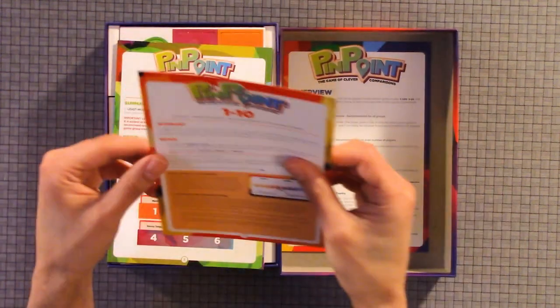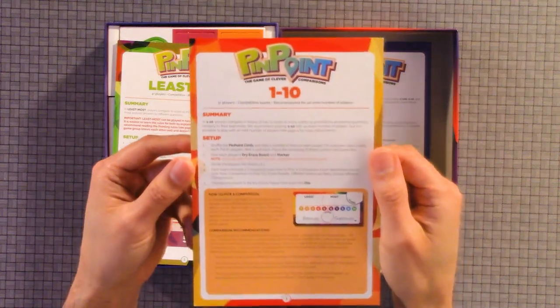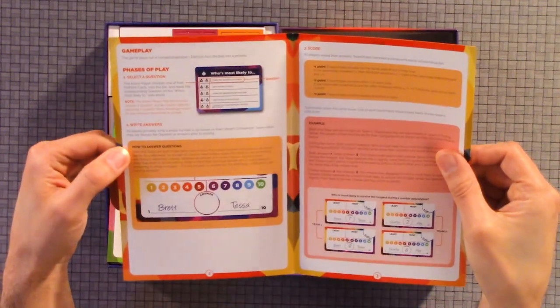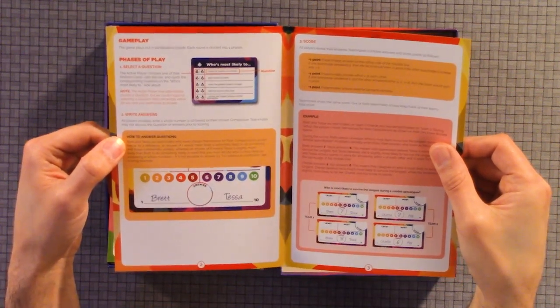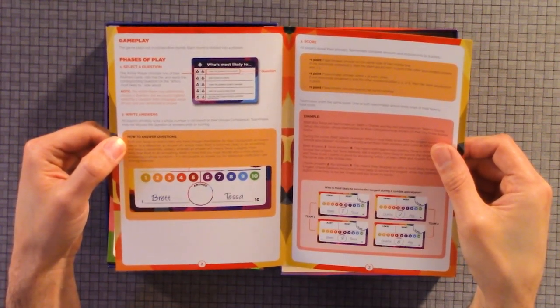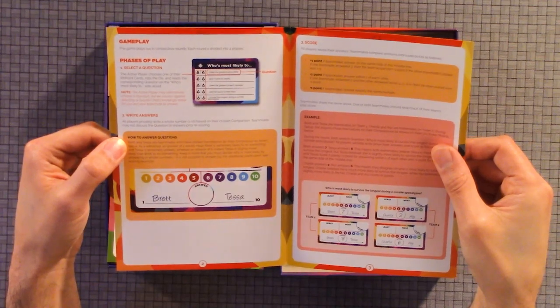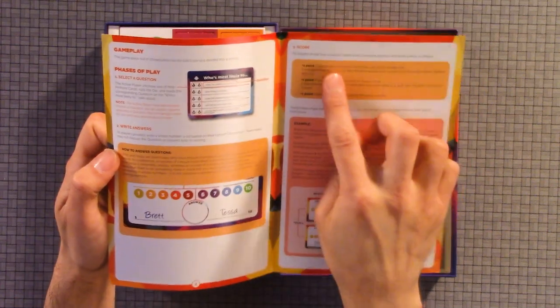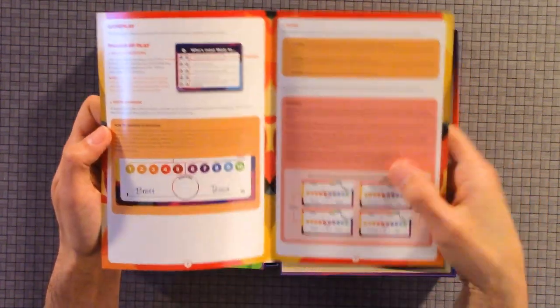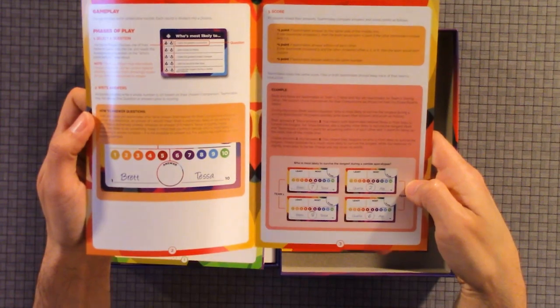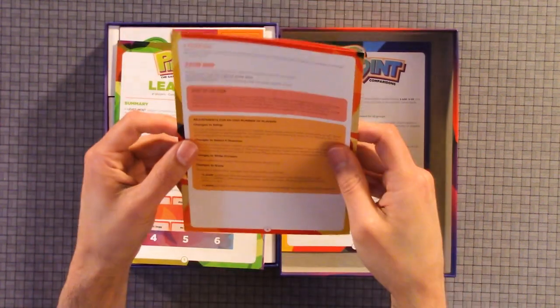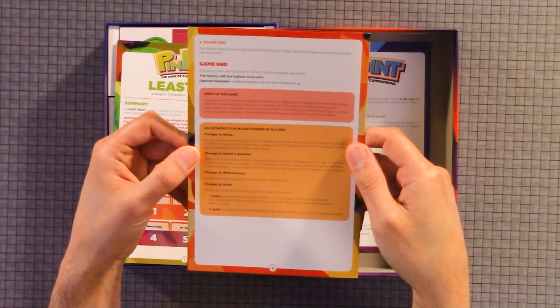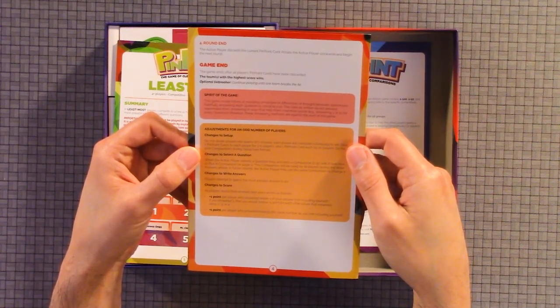Okay, so here we have the summary setup. We have gameplay, phases of play, right answer, score, select a question. So first you select a question, you write your answers, then you score. And it shows you an example of how that process pretty much is done. And then round end, game end, spirit of the game, adjustment for odd number of players.